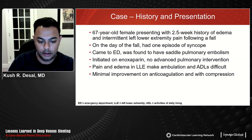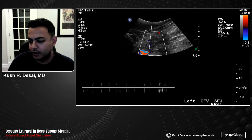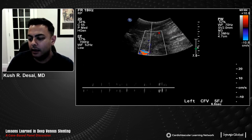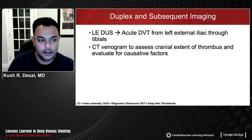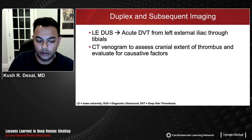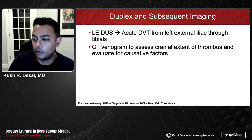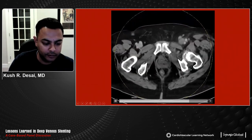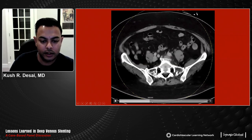A typical duplex exam shows completely occlusive, totally occlusive iliofemoral deep vein thrombosis with no flow channel whatsoever. CT scanning was obtained to assess cranial extent of thrombus and evaluate for causative factors, since while May-Thurner iliofemoral compression syndrome is most common on the left, surprises exist — filters, pelvic masses — that can change the tenor of intervention. The CT shows a potential compression requiring closer IVUS evaluation, with the vein acutely expanded and fat stranding consistent with thrombophlebitis and acute DVT inflammatory change. The common femoral vein is also expanded and filled with clot.